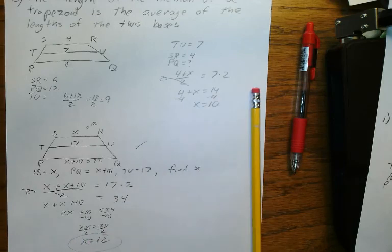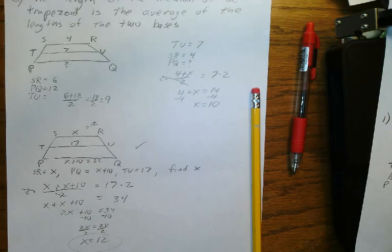So the median of a trapezoid has two properties: one, it is parallel to the two bases; and two, its length is the average of the lengths of the two bases.